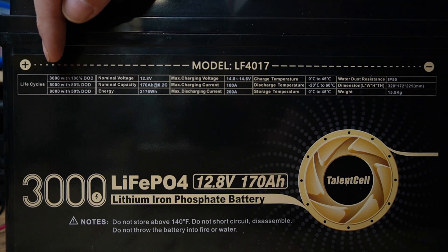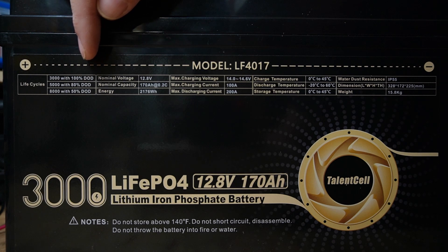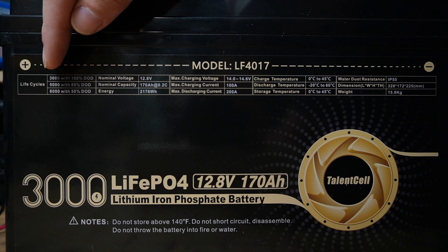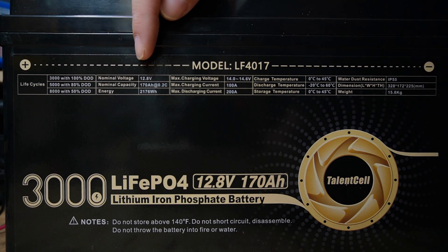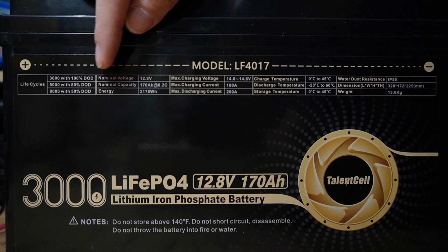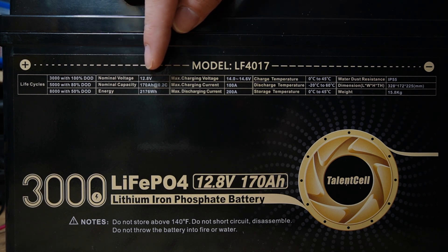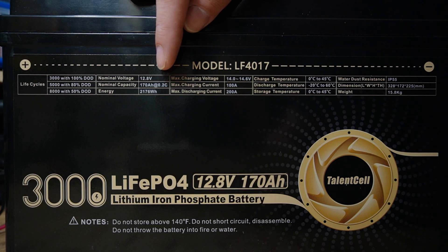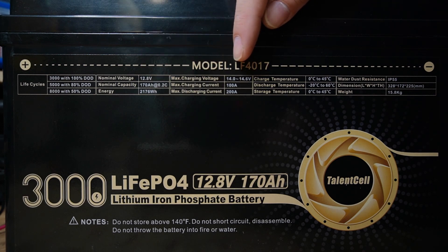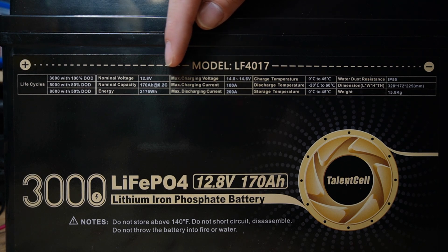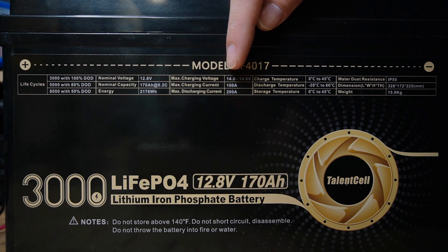We have 3,000 charge cycles with 100% depth of discharge, 5,000 with 80% depth of discharge, and 8,000 with 50% depth of discharge. Our nominal voltage is 12.8 volts, nominal capacity of 170 amp hours at a 0.2C discharge rate, and energy of 2,176 watt hours. Charging voltage is 14 to 14.6 volts, maximum charging current is 100 amps.